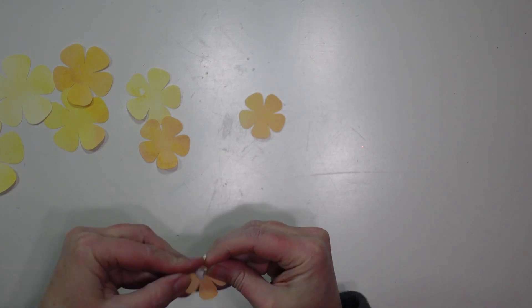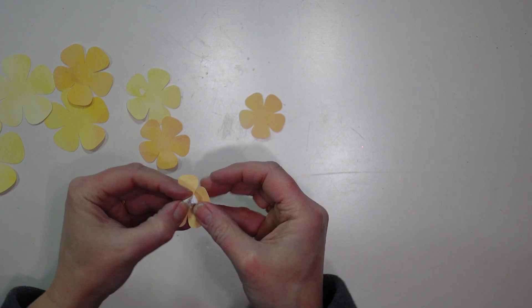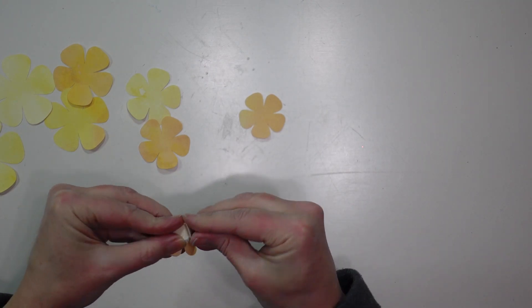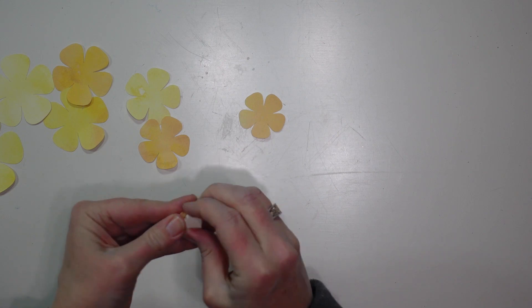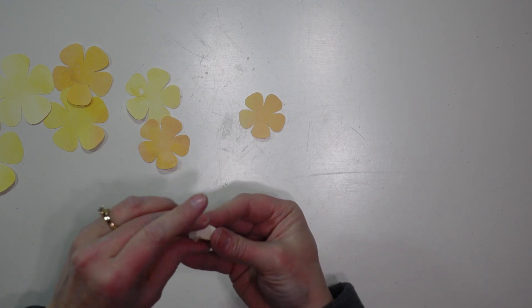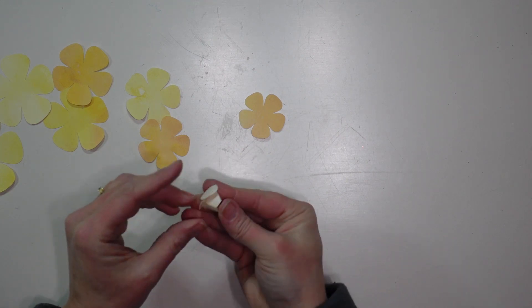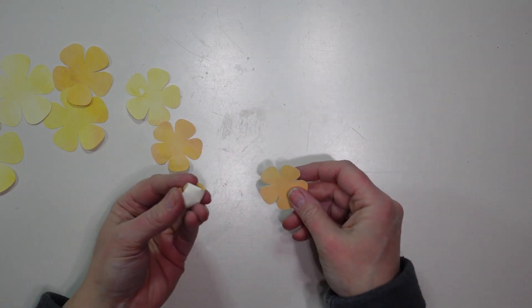I'm going to take the smallest petal and just fold the petals up around that little paper ball. It is totally okay to kind of crinkle them and squish them up because that is what gives this flower a more realistic look.